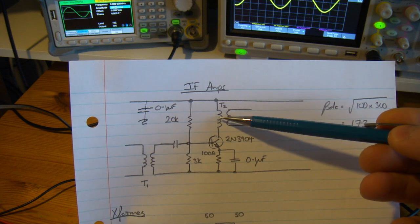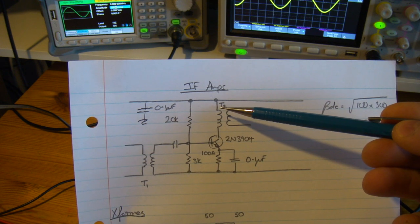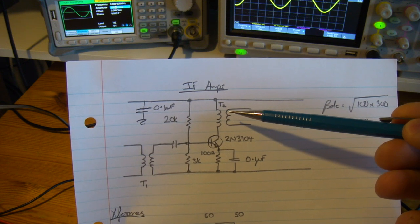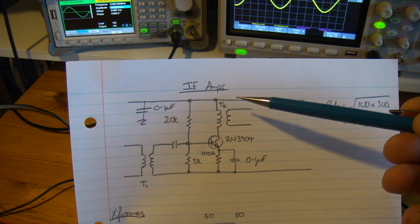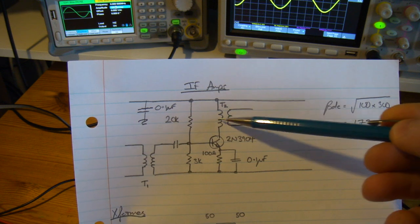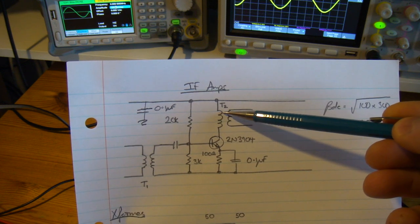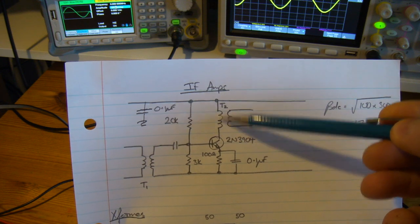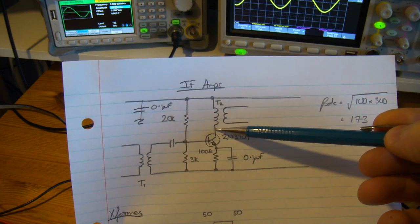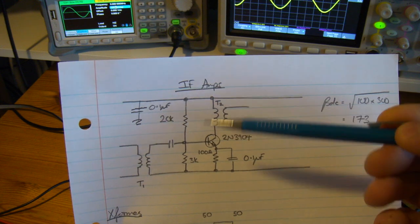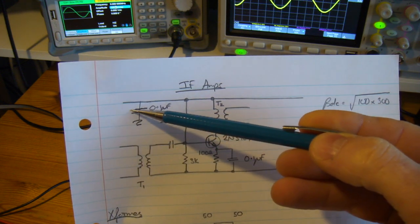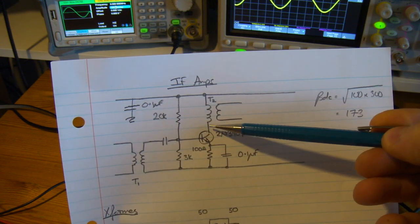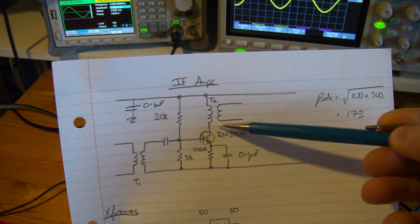For the output impedance I'm going to use for testing purposes a 10 turn RFC radio frequency choke using an FT37-43 to get a high inductive reactance. That's going to be folded over to earth through that capacitor, and then I'm going to look in here and work out what the output impedance is.